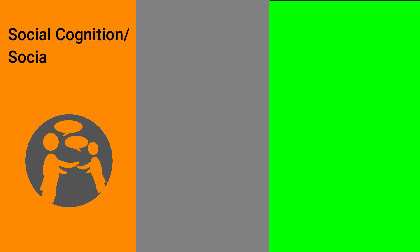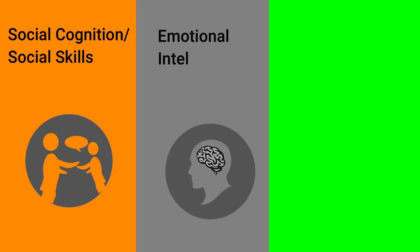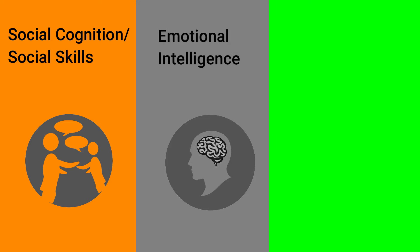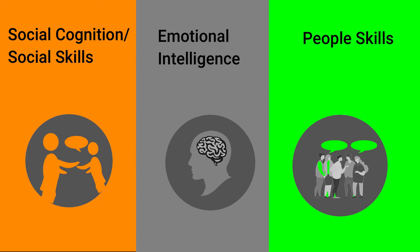Social literacy includes the following social skills: first, social cognition or social skills; second, emotional intelligence; and third, people skills.